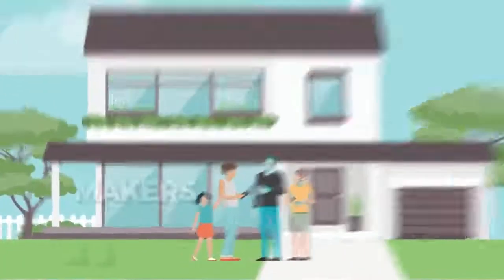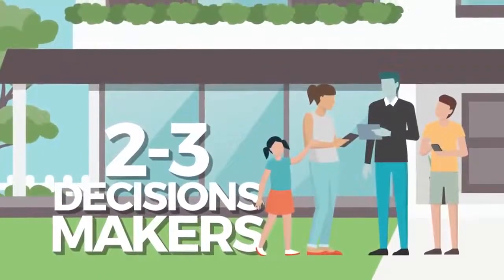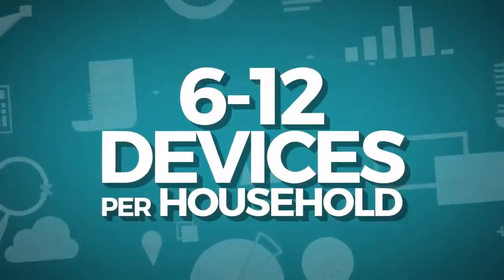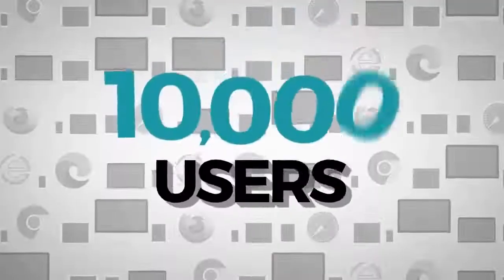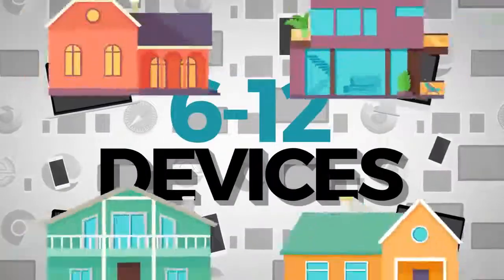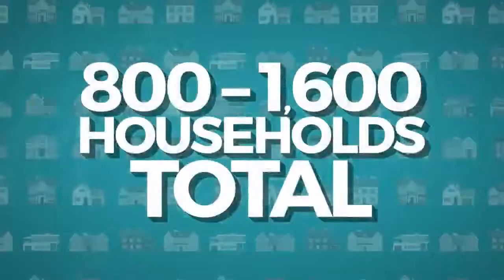A typical household or family might have two to three decision makers on average. So if you do the math, you might have six to 12 devices per household. Now let's go back to our 10,000 users. At six to 12 devices, we would have about 800 to 1,600 houses total.